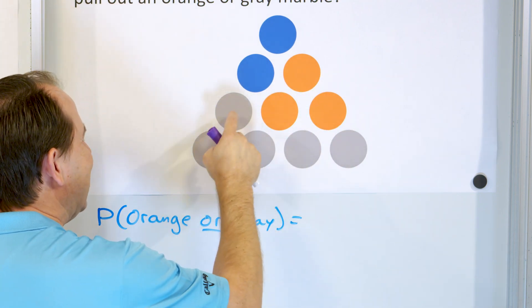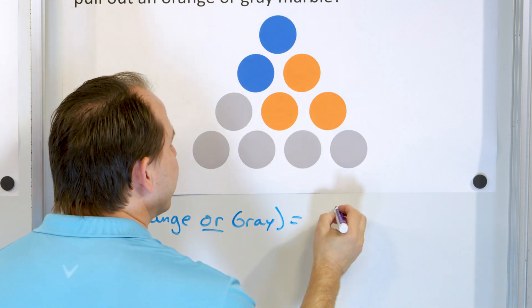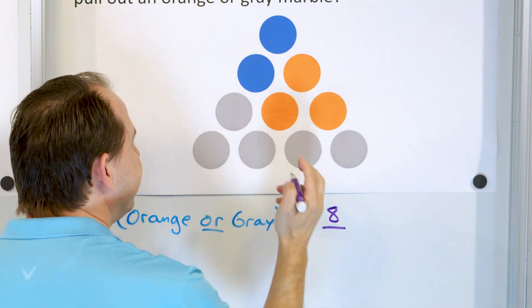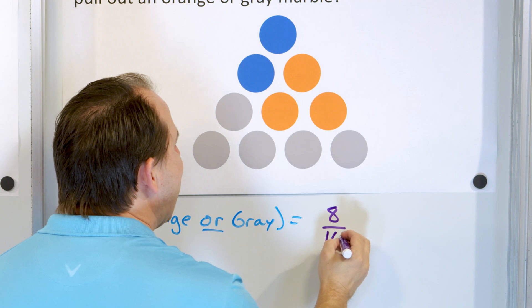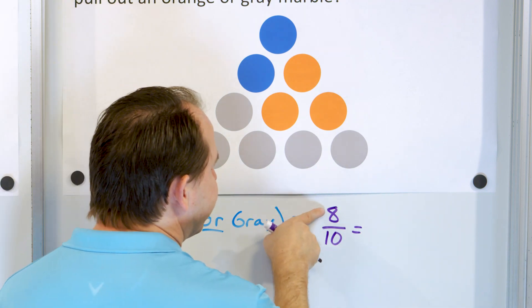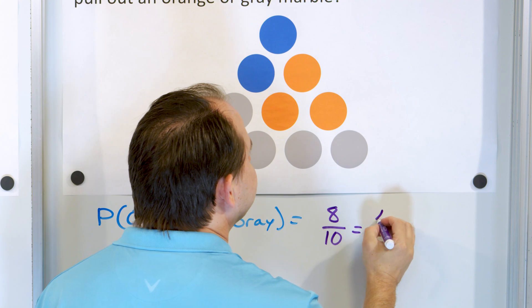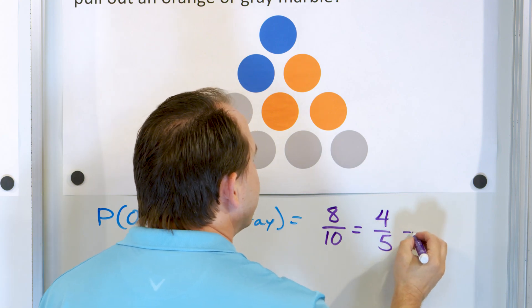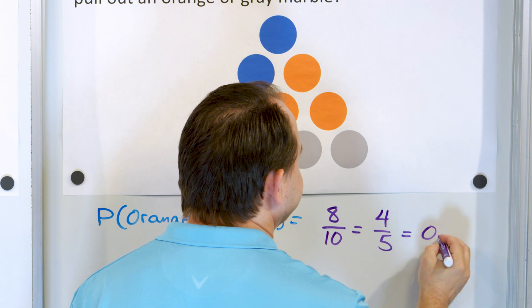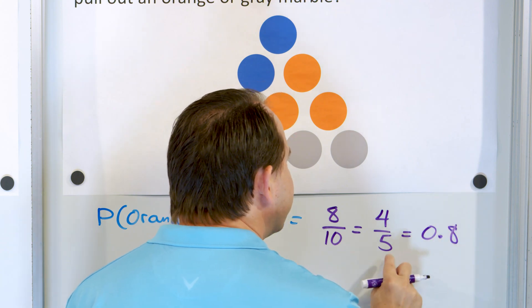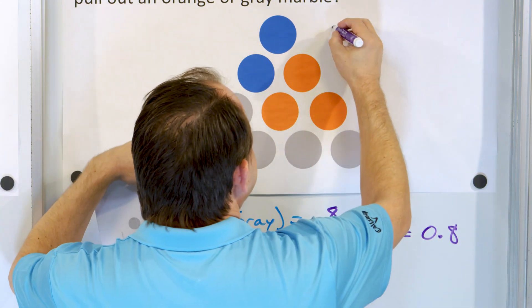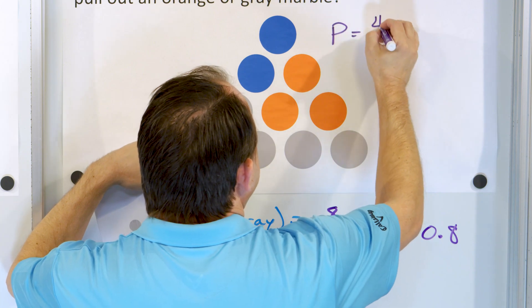Eight possible ways of getting orange or gray out of a total of ten. Reducing by dividing by 2 gives you four fifths. When you divide that in a calculator, you get 0.8. So the probability is four fifths, which you can represent as a fraction or decimal — 0.8 or 80%.